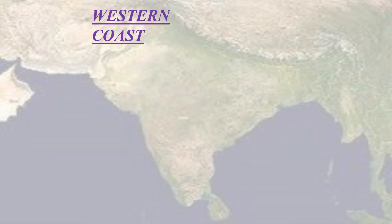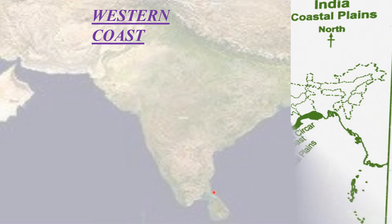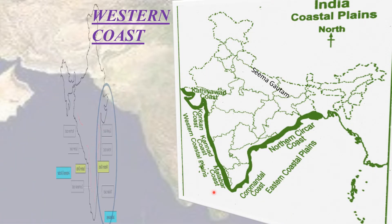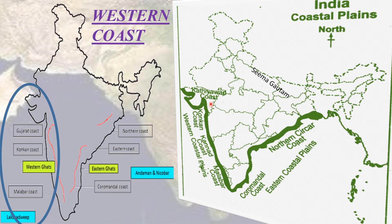Lying between the west coast of India and the western ghat hills, the western coastal plain is a thin strip washed by the Arabian Sea. It extends from Kutch in the north to Kanyakumari in the south. Short, swift rivers flow in the region, so no deltas are found here. The plain is divided into three regions: the Konkan coast covering Maharashtra and Goa, the Kannada coast along Karnataka, and the Malabar coast covering Kerala. It stretches across Gujarat, Maharashtra, Goa, Karnataka, and Kerala.